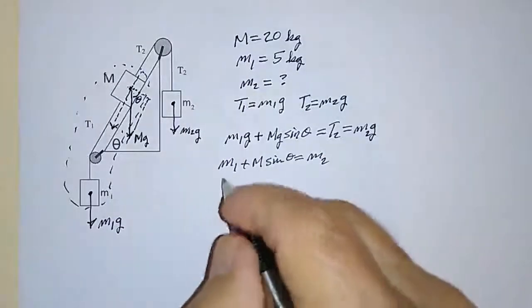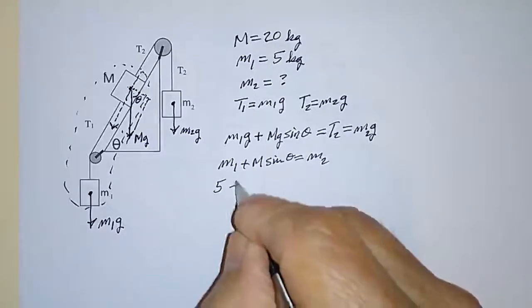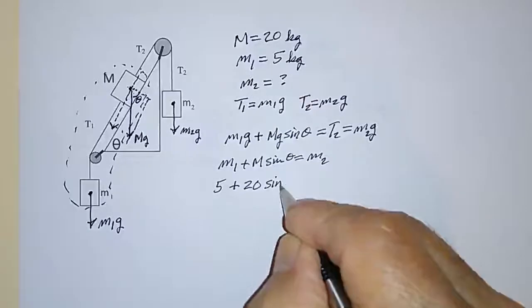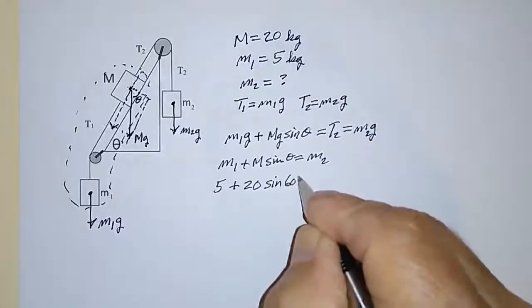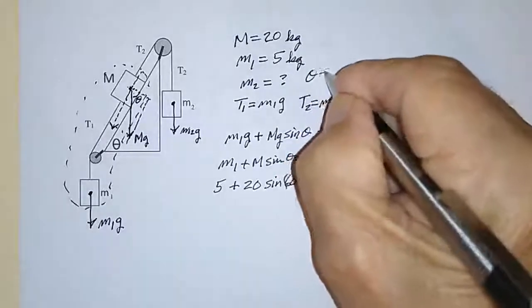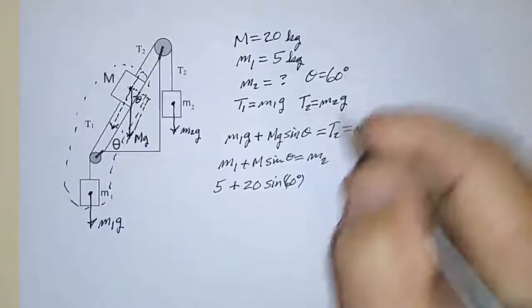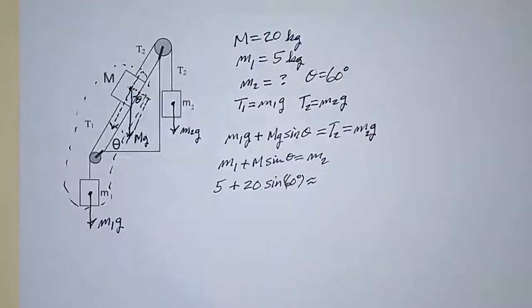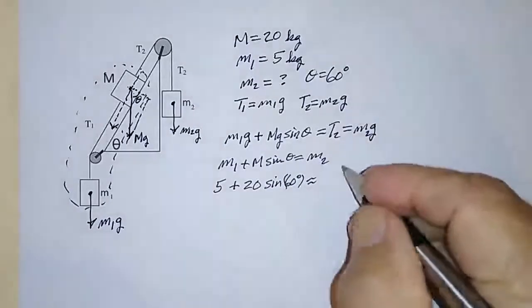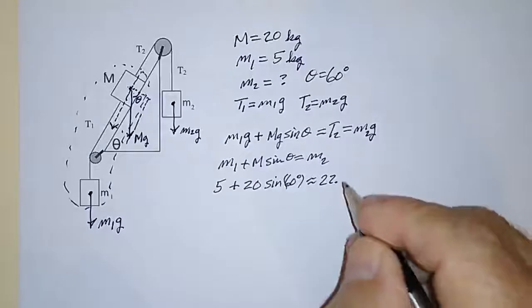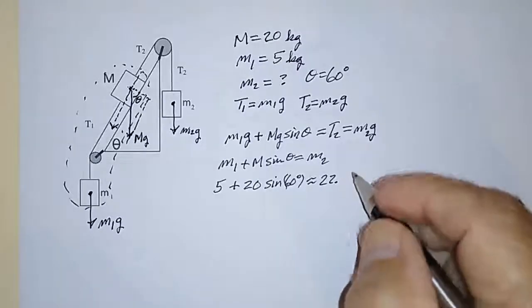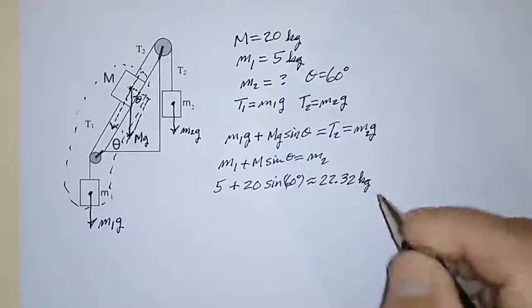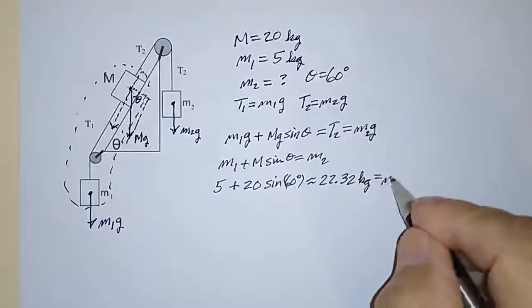And then I'll just plug in the numbers, that's 5 kg plus 20 kg times the sine of 60 degrees. I didn't say it, but theta is equal to 60 degrees. And that works out to be, you just take your calculator, that works out to be 22.32 kg approximately. That's what M2 is.